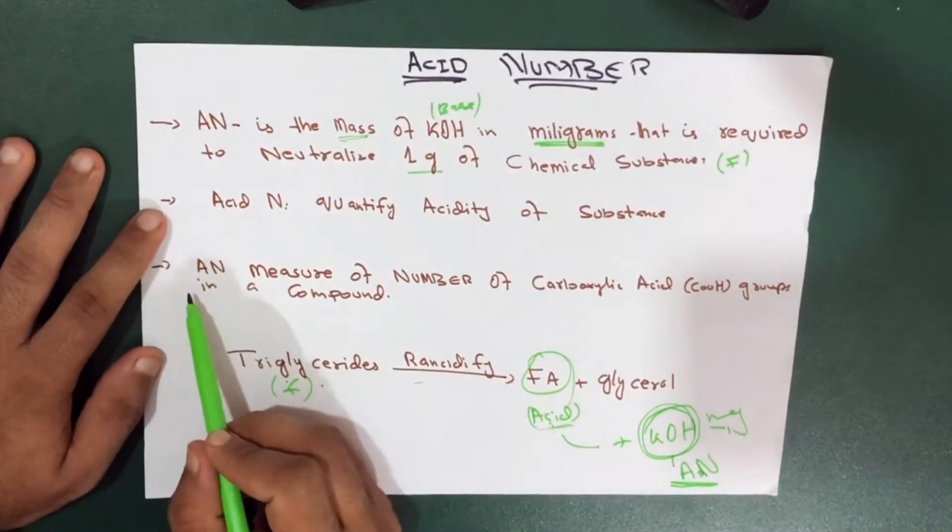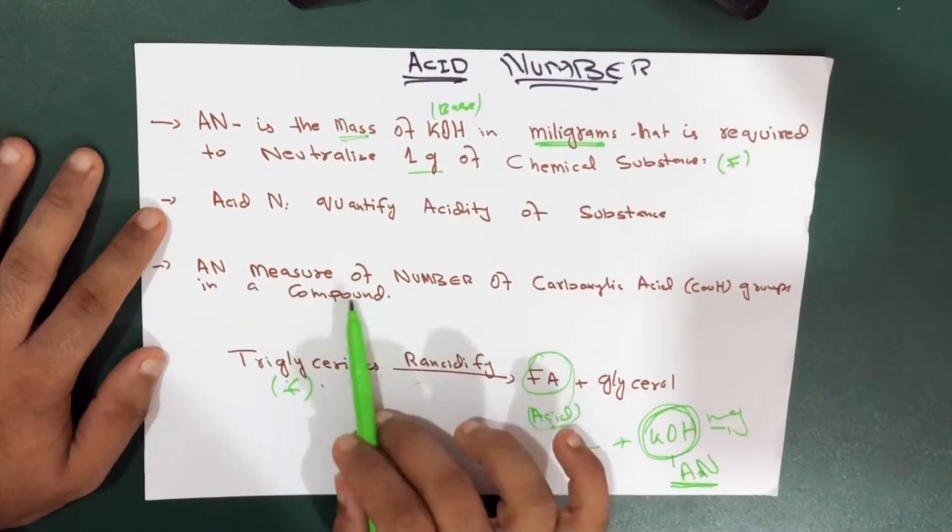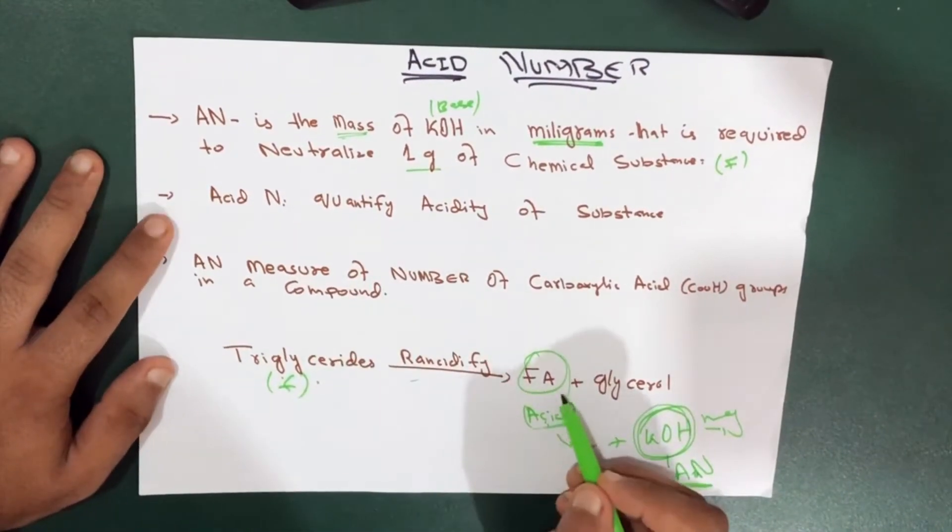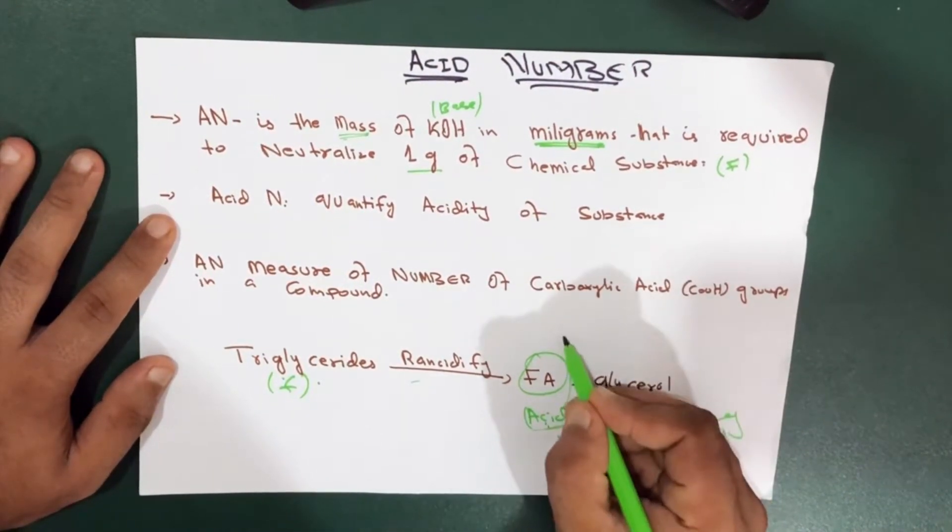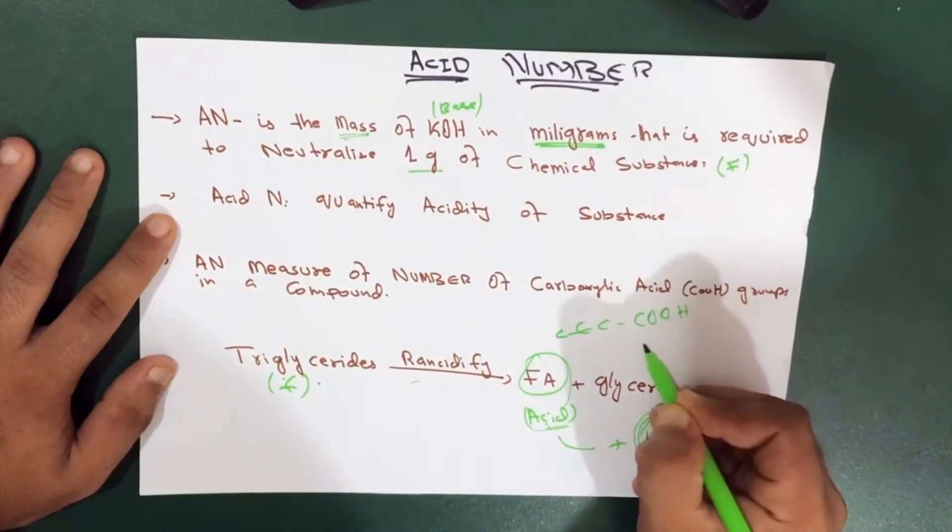So we have another thing as well. Another point is that acid number measures the number of carboxylic groups in a compound. For example, we know that fatty acid is made up of a carbon chain in the end which has the carboxylic acid.